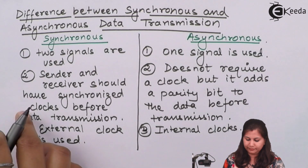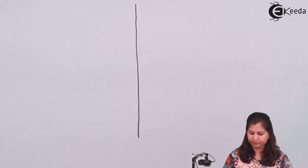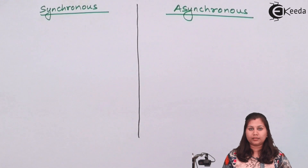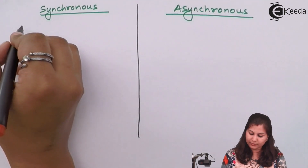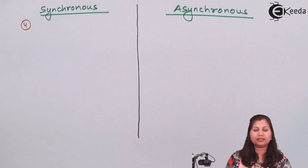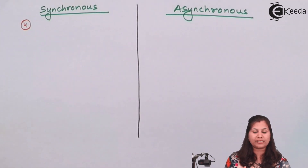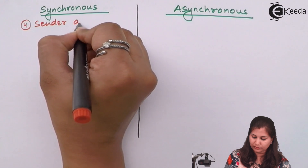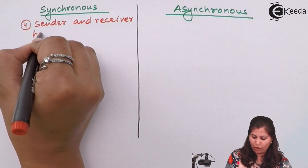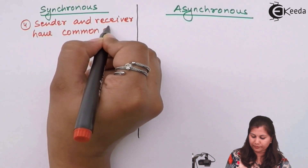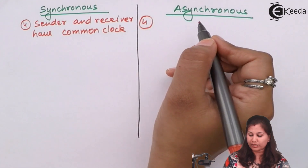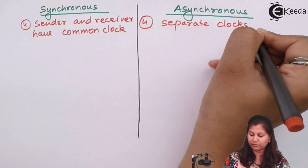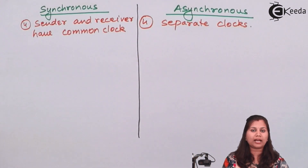Another difference is that in synchronous, because an external clock is used, the transmitter and receiver share a common clock. Whereas in asynchronous, they have separate clocks because each uses its own internal clock — the transmitter has a separate internal clock, and the receiver also has its own separate internal clock.